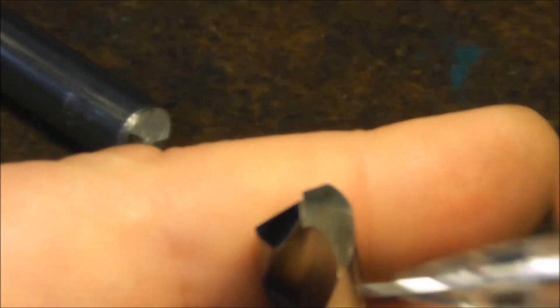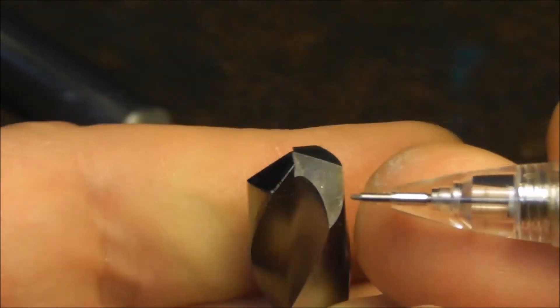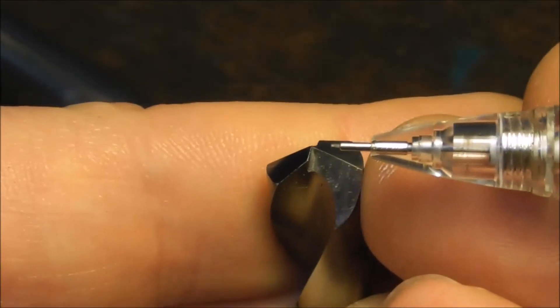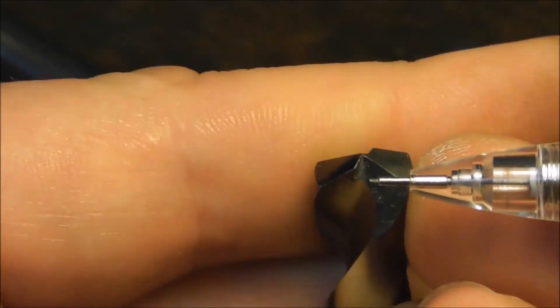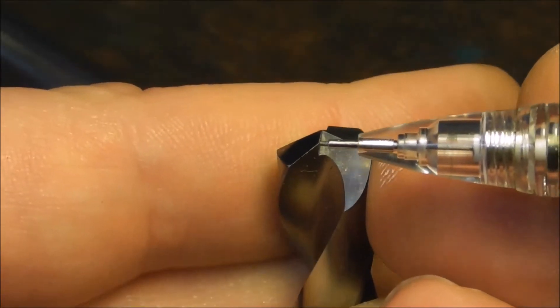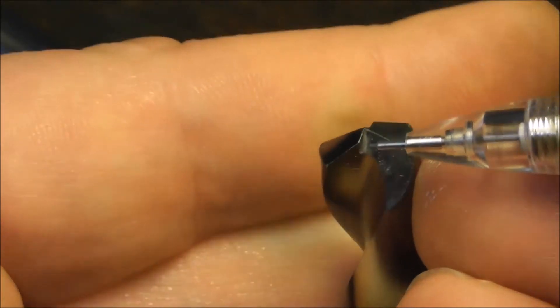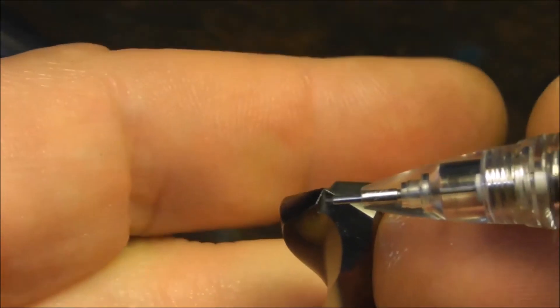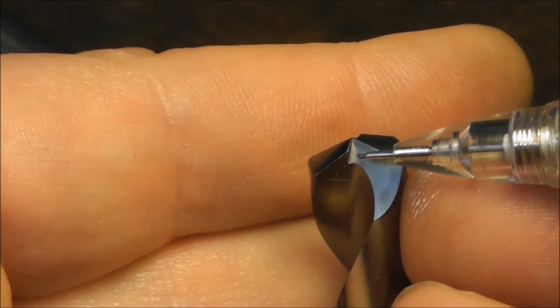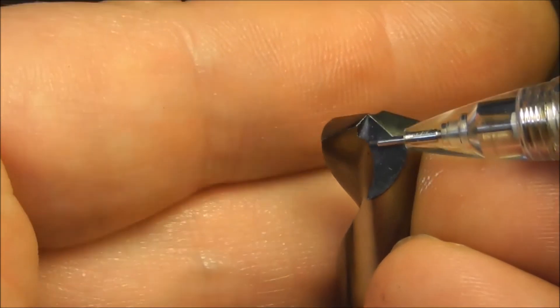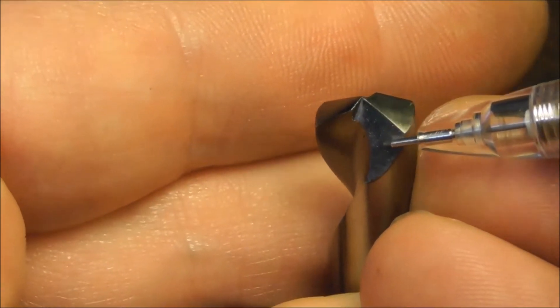That's a little bit different from a split point. A split point is also web thinning, but it's a particular type of shape whereby it's coming in at a different angle and you've got a much sharper, more critical shape to the web thinning.